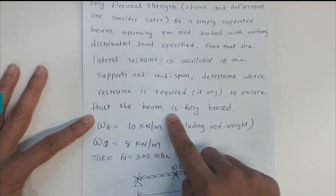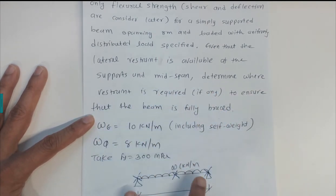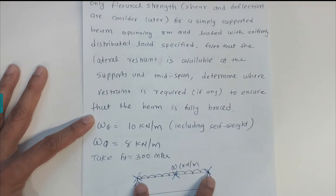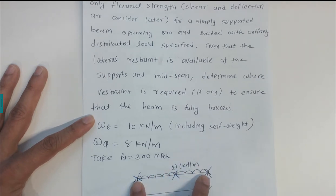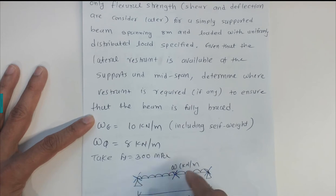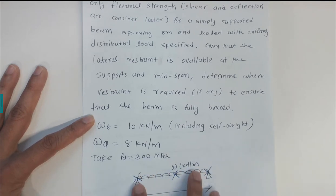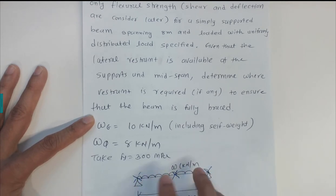We need to ensure the beam is fully restrained. If the given restraint is enough to satisfy the fully restrained condition, we check that. If not, we determine what additional restraint needs to be provided to ensure the fully restrained condition is satisfied.